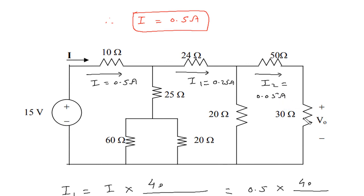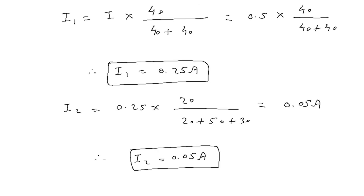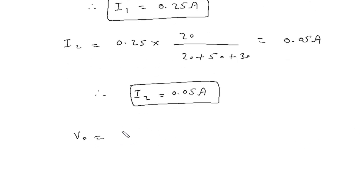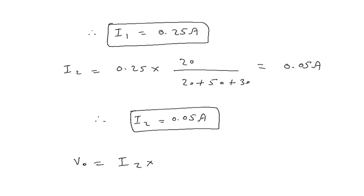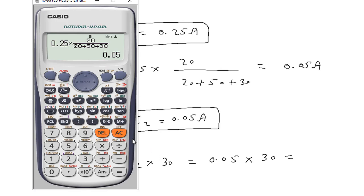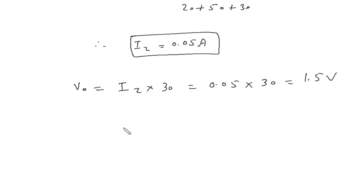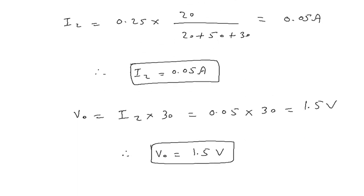Now we have the value of this current and this resistance, so from this we can find the value of Vo. Vo is equal to I2 into 30 Ohm: 0.05 into 30 is equal to 1.5 Volt. Therefore Vo is equal to 1.5 Volt.